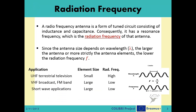A radiofrequency antenna is a form of tuned circuit consisting of inductance and capacitance. Consequently, it has a resonance frequency, which is also called the radiation frequency of that antenna. This is the frequency where the capacitive and inductive reactances cancel each other out. At this point, the radiofrequency antenna appears purely resistive, with resistance being a combination of the loss resistance and the radiation resistance. The capacitance and inductance of a radiofrequency antenna are determined by its physical properties and the environment where it is located.